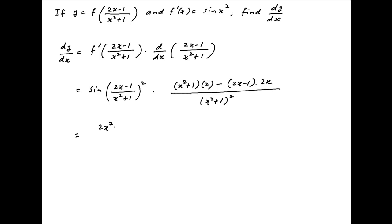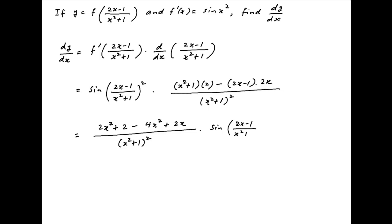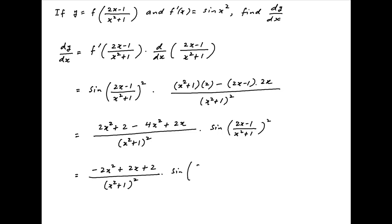Therefore dy/dx simplifies to (2x² + 2 - 4x² + 2x) divided by (x² + 1)² multiplied by sin of ((2x - 1)/(x² + 1))². This further simplifies to (-2x² + 2x + 2) divided by (x² + 1)² multiplied by sin of ((2x - 1)/(x² + 1))², which is the required answer.